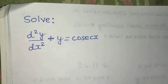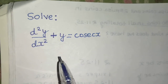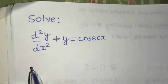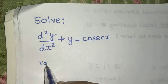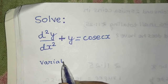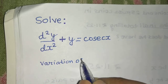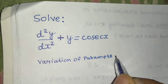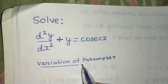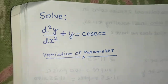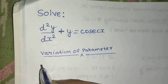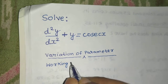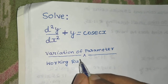Hello everyone. Let's solve this question. Earlier I have solved this question using the normal method, but this time I will use the method of variation of parameters. So because this is the first time I am discussing a problem by variation of parameters, it's important to discuss the working rule behind it.